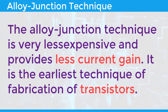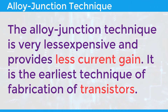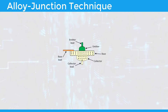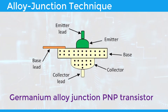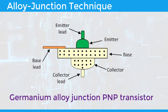Let's look into the alloy junction technique. The alloy junction technique is very inexpensive and provides less current gain. It is the earliest technique of fabrication of transistors. The transistor built using the alloy junction technique is capable of handling the maximum rating of current and power.